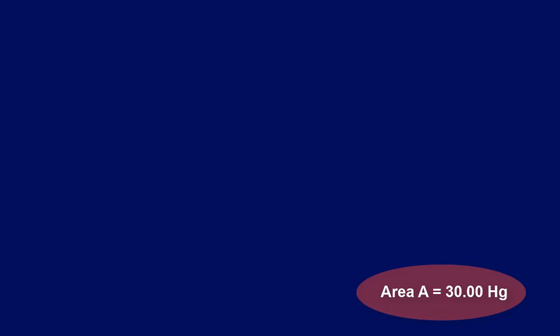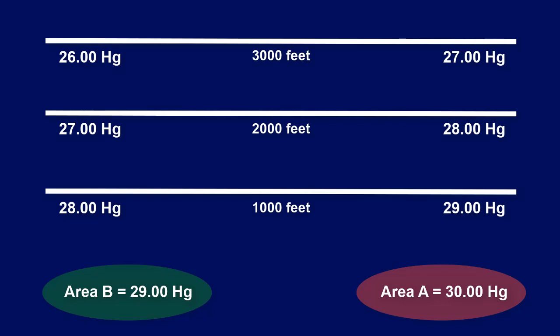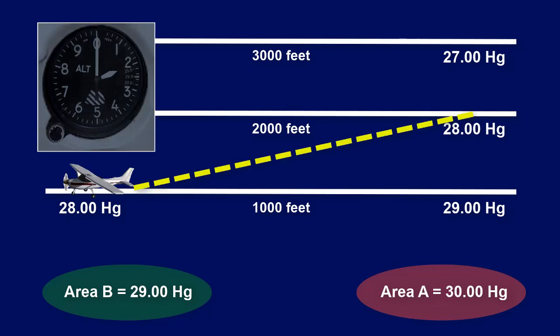To emphasize this point: say the pressure at area A is 30 inches of mercury at sea level, and at area B the pressure is 29 inches. You plan to fly at 2,000 feet from area A to area B. At area A, the altimeter is set to 30 inches, so at 2,000 feet you are at 28 inches of mercury. If you fly to area B without updating your altimeter, you still think you're at 2,000 feet — but you are only flying at 1,000 feet, because 28 inches of mercury corresponds to 1,000 feet at area B.